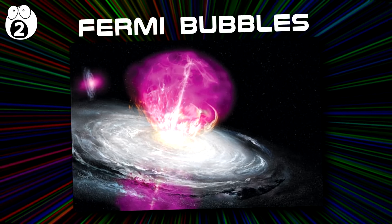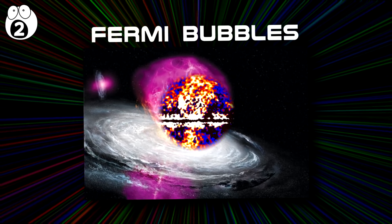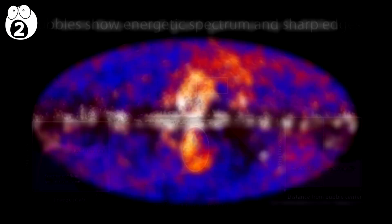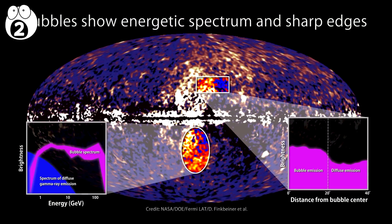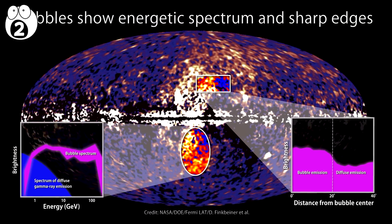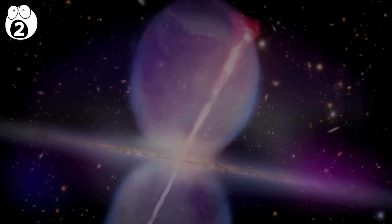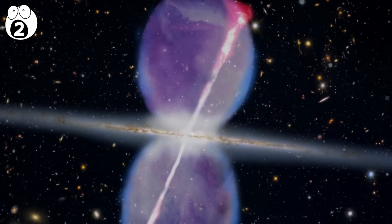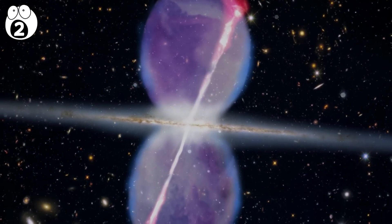Fermi Bubbles. These were first discovered in 2010, and are two large bubbles invisible to the human eye, located above and below the center of our galaxy. Scientists have only recently been able to discover the exact origin of these bubbles, and it seems like there are two large jets coming from the center of our galaxy, dispersing matter and light outwards.